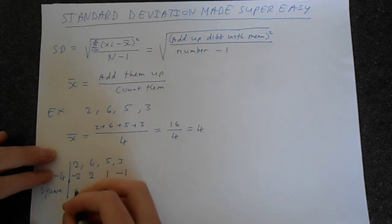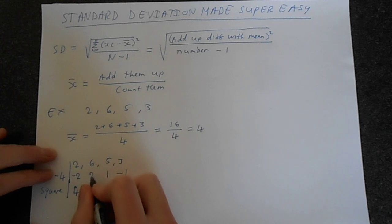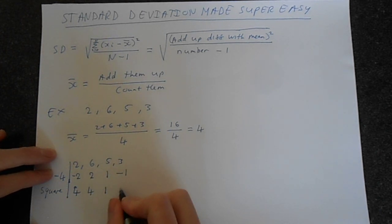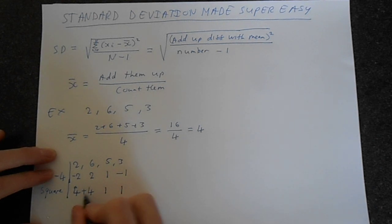And square these. So minus 2 squared is 4. 2 squared, that's 4. 1 squared is 1. Minus 1 squared is 1. And then we just add these up. So basically add them up. What do we get? 4 plus 4 is 8, 9, 10. So we get 10.